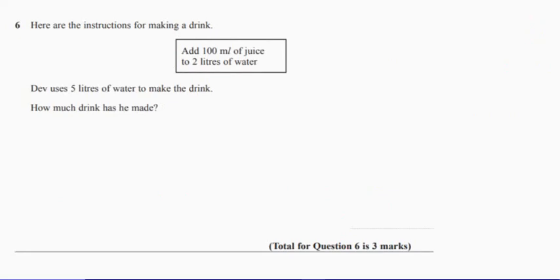Question six. So we have some instructions for making a drink. Add 100 millilitres of juice to two litres of water. Dev uses five litres of water to make his drink. How much drink has he made?